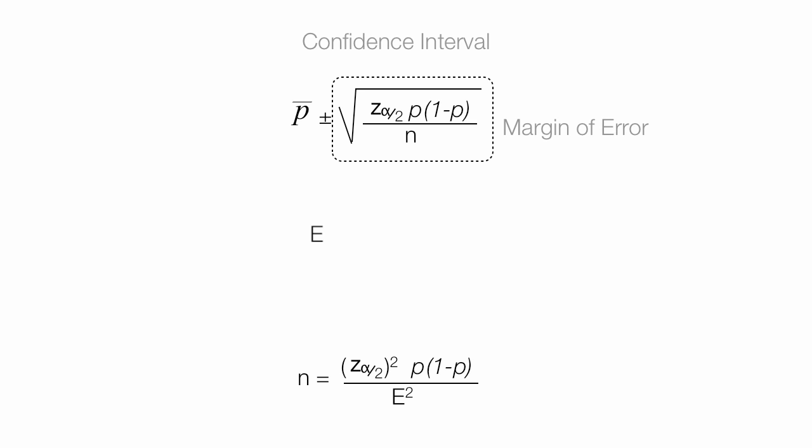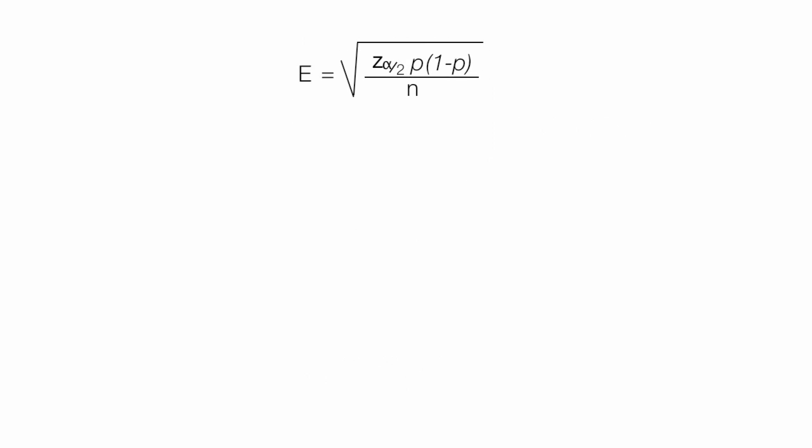What I'm going to do is take the margin of error and solve for n. I'm going to give myself a little bit more space here. Again, I'm going to solve for n. Get rid of this square root sign, and the way I do that is by squaring both sides.